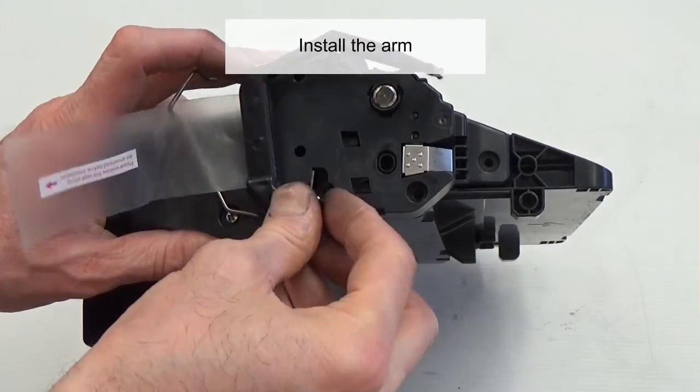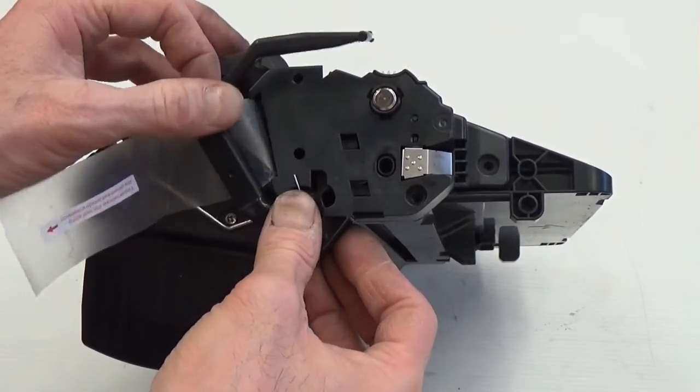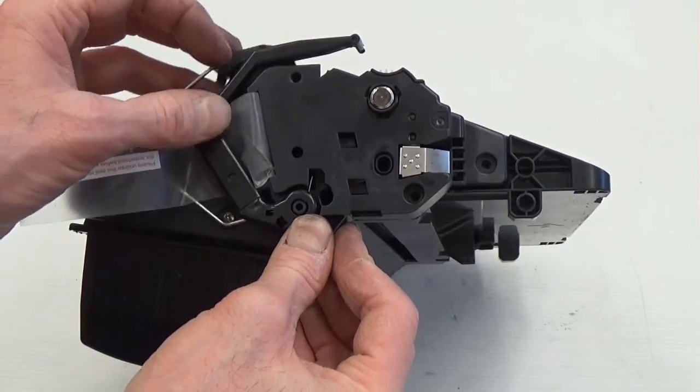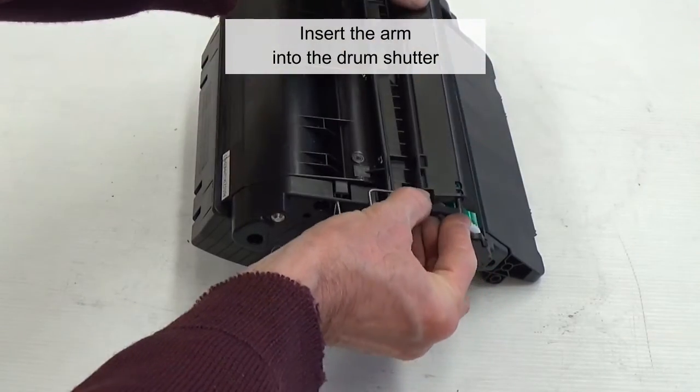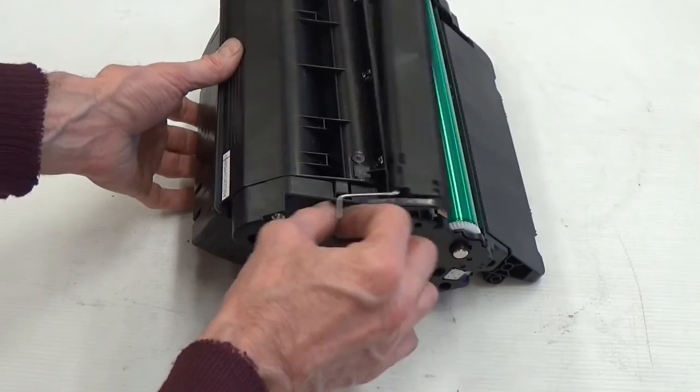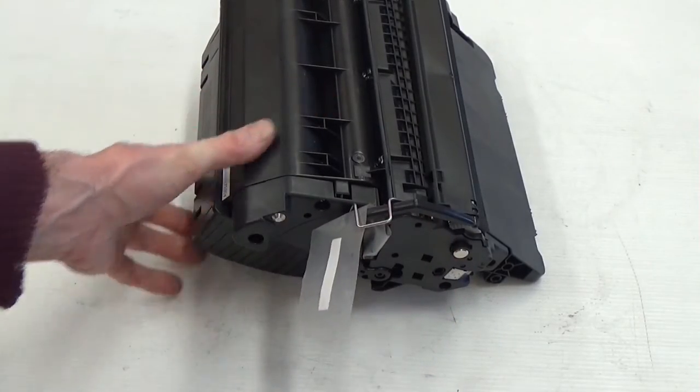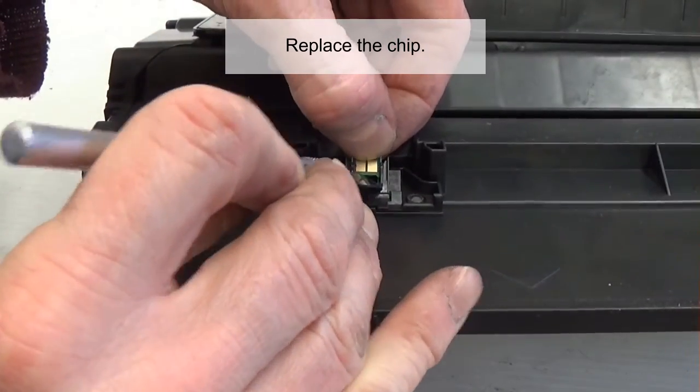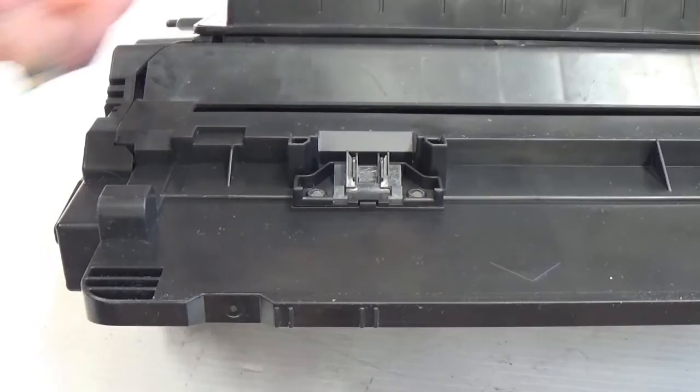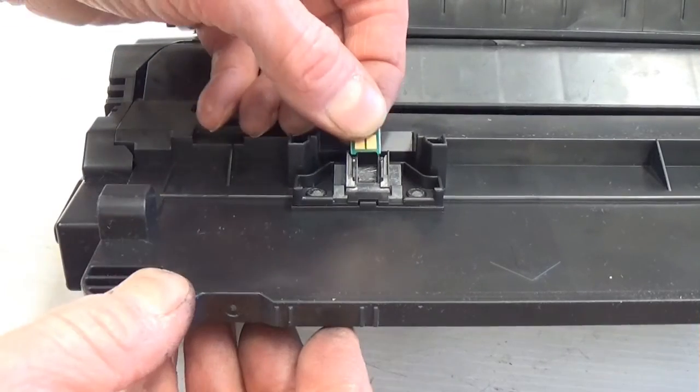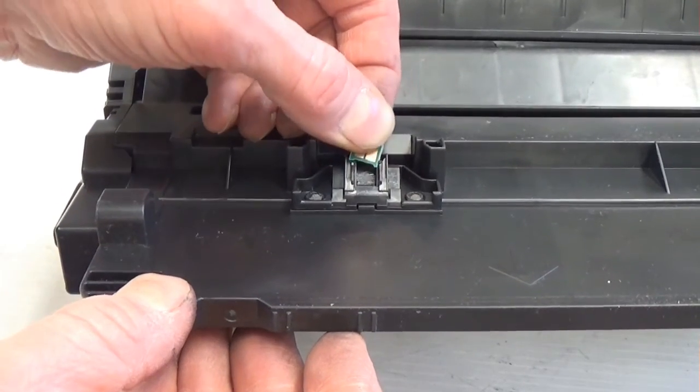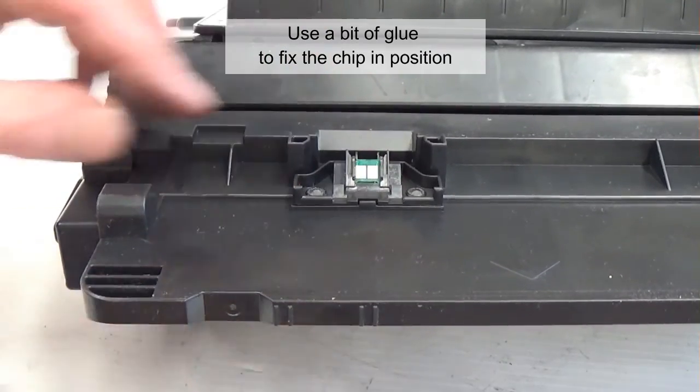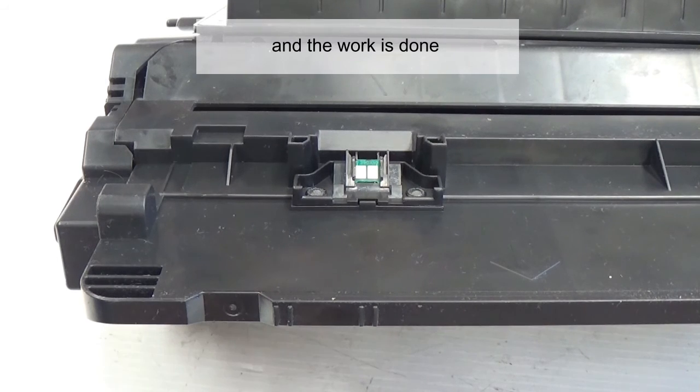Install the arm. Insert the arm into the drum shutter. Replace the chip. Use a bit of glue to fix the chip in position, and the work is done.